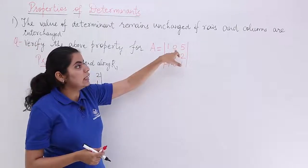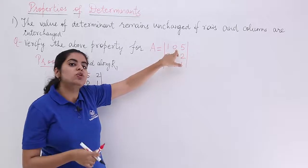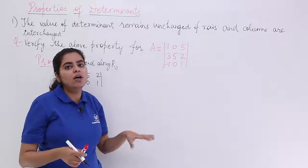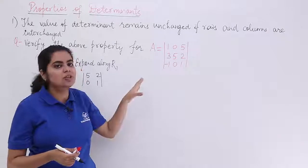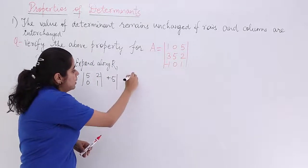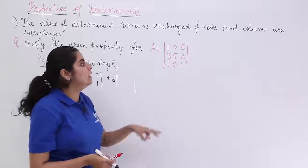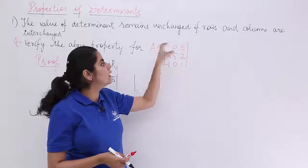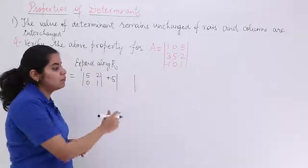Next is taking into consideration the 0 element. 0 multiplied by something is 0 only, so just ignore this. You have then plus 5. And what is the sub-determinant? Ignore the third column, ignore the first row. You have 3, 5, minus 1, 0.